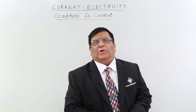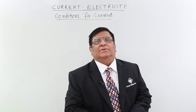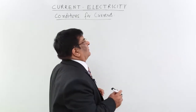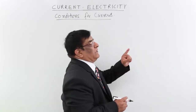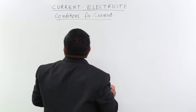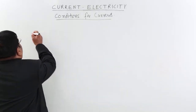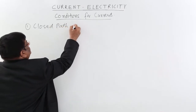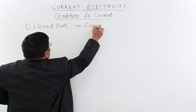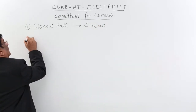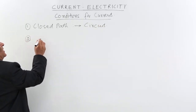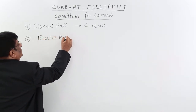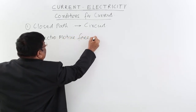Today we will study what are the required conditions so that current flows in a conductor. The first condition is that there should be a path, which we will call a circuit — a closed path. The second thing required is a driver or a force, which we will call electromotive force, that is, driving force.